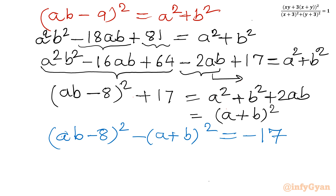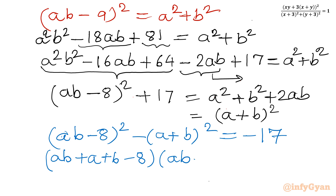Applying the difference of squares formula (A² minus B² = (A+B)(A-B)), we can write: the first bracket as (ab plus a plus b minus 8), and the second bracket as (ab minus a minus b minus 8), and the right-hand side is negative 17.